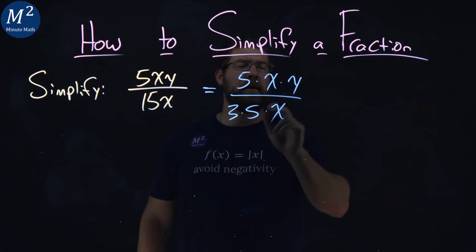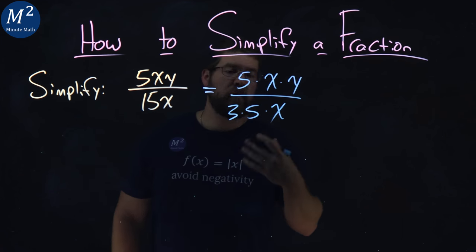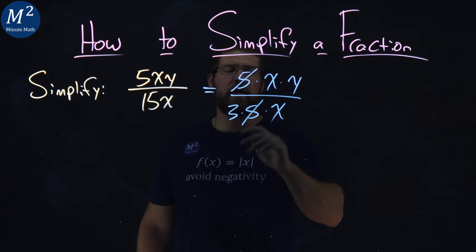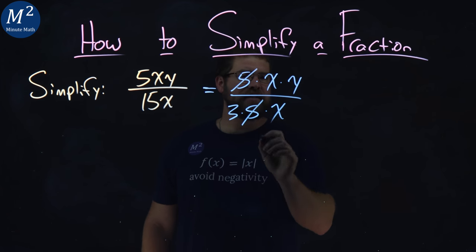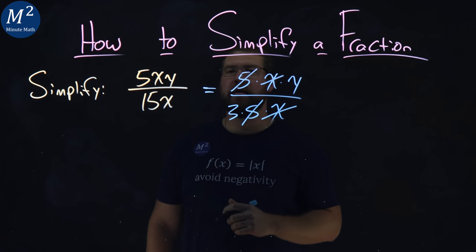So now I have 5 times x times y, and I have 3 times 5 times x. We need to cross off our common factors. Well, 5 is in the numerator and denominator - gone. X is also in the numerator and denominator - also gone.